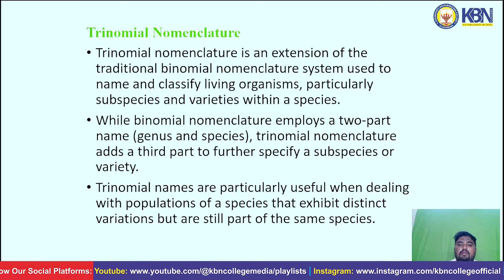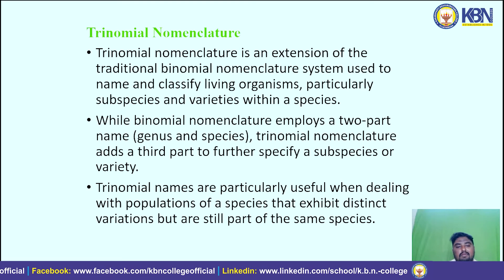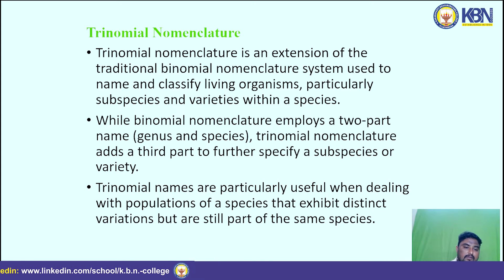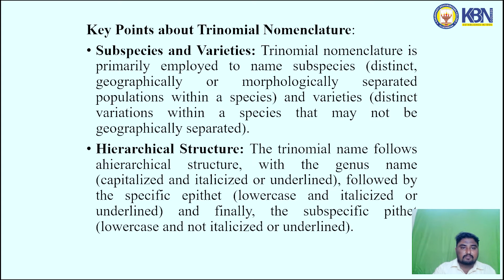Trinomial nomenclature is an extension of the binomial nomenclature system used to name and classify subspecies and varieties within a species. While binomial nomenclature uses two parts (genus and species), trinomial nomenclature adds a third part to further specify a subspecies or variety. Trinomial names are useful when dealing with populations that exhibit distinct variation but are still part of the same species. It is primarily applied to name subspecies — geographically or morphologically separated populations — and varieties within a species.